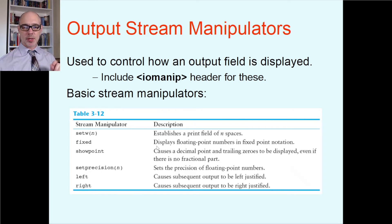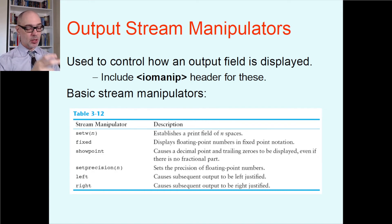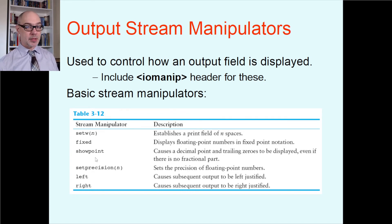Fixed and showpoint are things that specifically modify how floating point numbers are displayed. Fixed says we're going to display floating point numbers in fixed-point notation as opposed to scientific notation — normally when numbers get really large, they get printed in scientific notation with the E symbol, like 2E5 meaning 2 times 10 to the fifth power. If you don't want that, you can send in 'fixed' and you'll always see a normal decimal number. Showpoint causes a decimal point and trailing zeros to be displayed even if there's no fractional part — so the number 8 would display as 8.0.